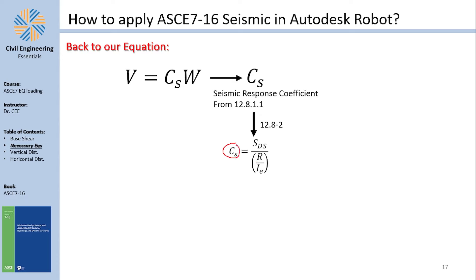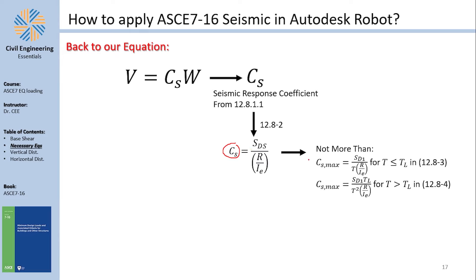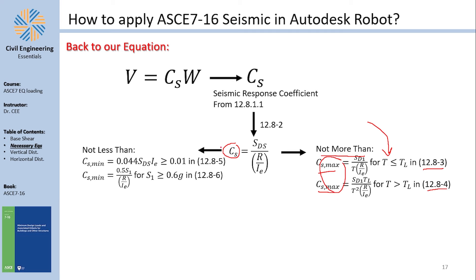The computed Cs must also satisfy upper-bound limits from equations 12.8-3 and 12.8-4, and lower-bound limits from equations 12.8-5 and 12.8-6. There are multiple variables involved — each needs to be understood individually.